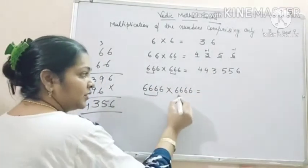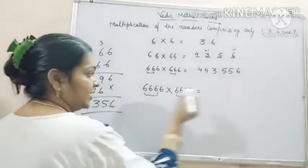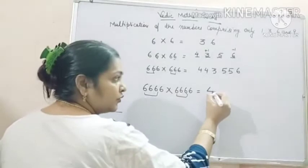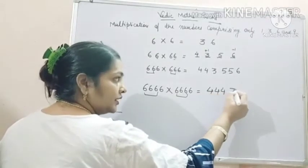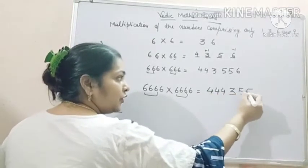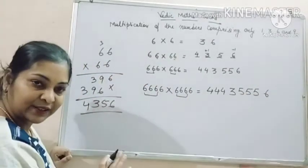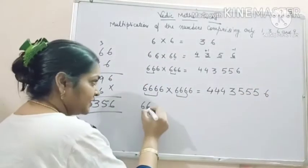What you will do? For these 3 sixes, write 7. What you will write? 444, then 3556, then 6. So easy it is. Let's try once more.